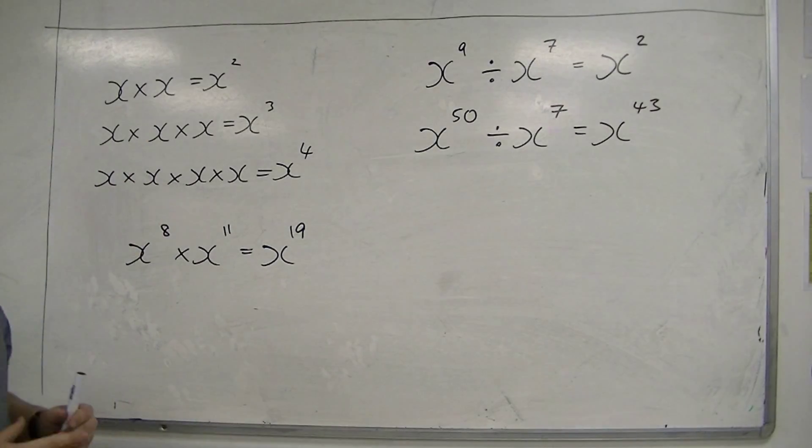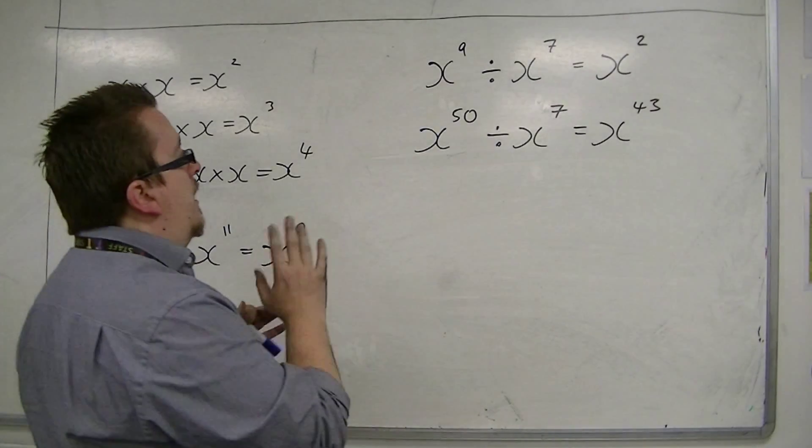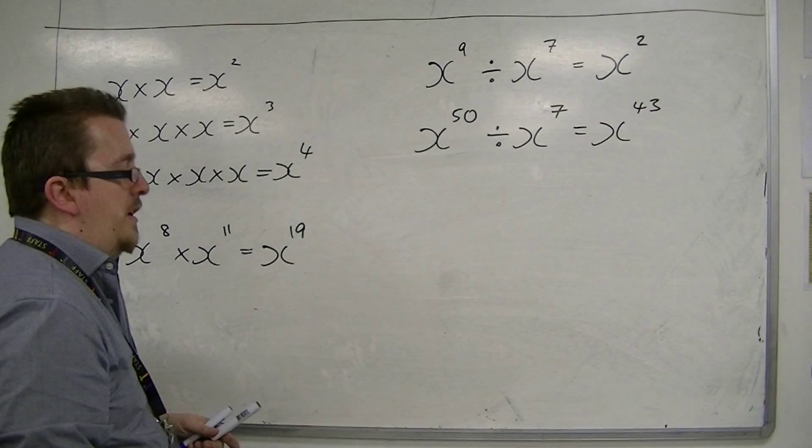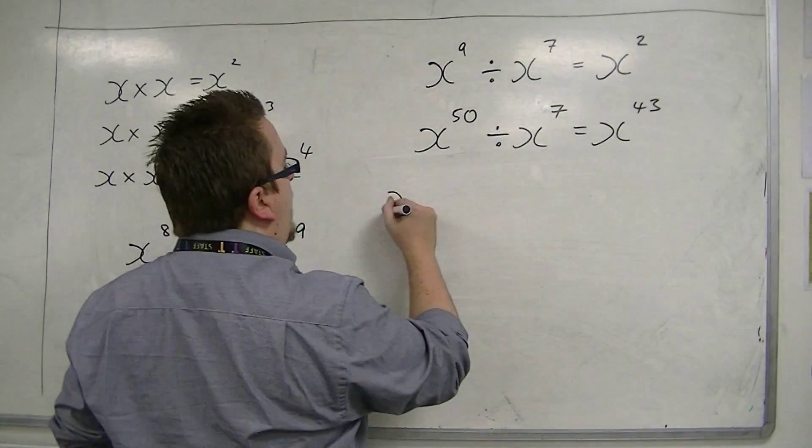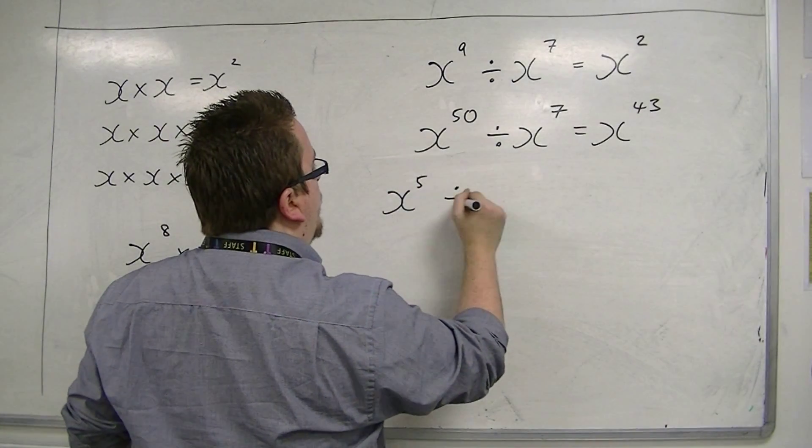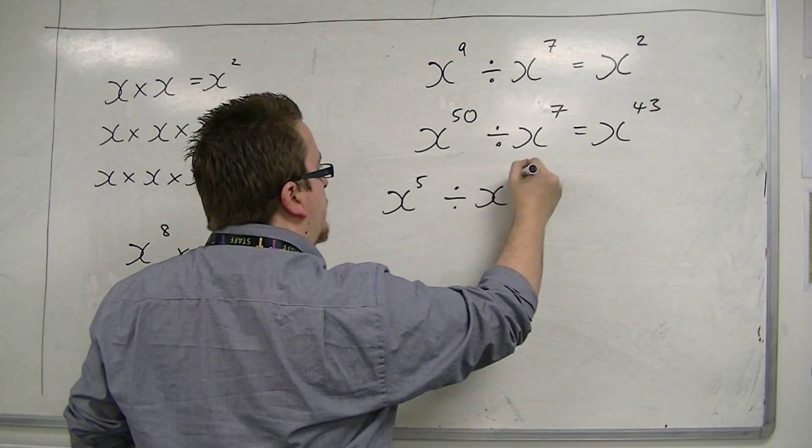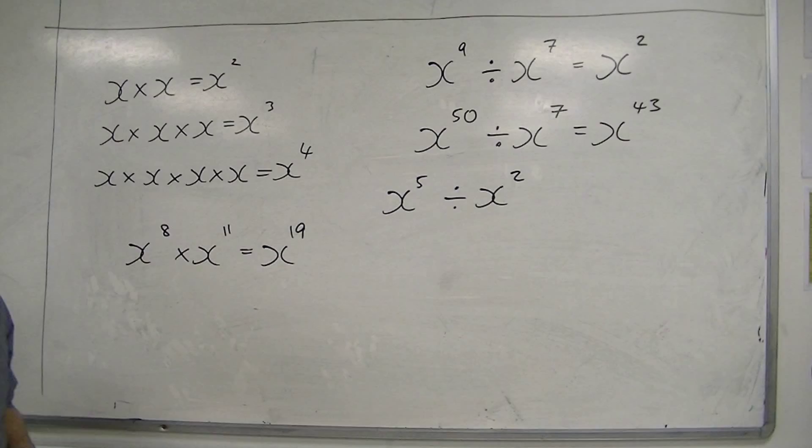Because before we were able to write out these x's together, and I could easily see that together they would make x to the 19, for example. Well, if we looked at x to the 5 divided by x to the, well, let's do x squared, and we looked at this as an example.